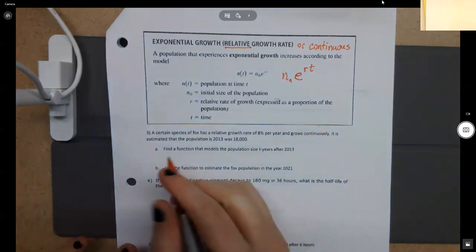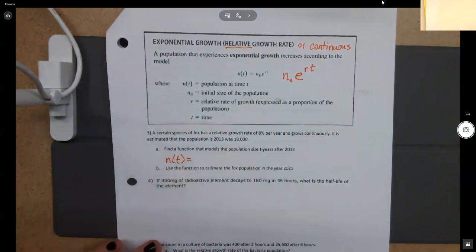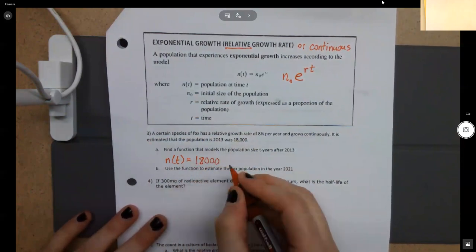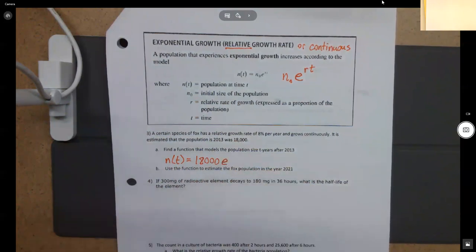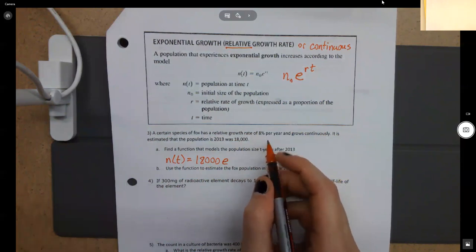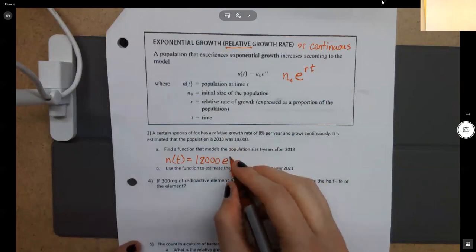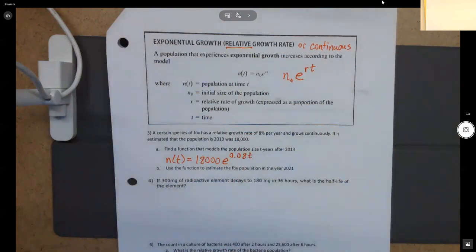So hopefully what you guys got for that formula is N of T, which is going to tell you the population after T amount of years equals, well, we have an initial population of 18,000 times E. Remember E is not a variable. It's actually a number. It's 2.71. Raised to the, now this is the biggest thing that people goof up on, is 8%. We have to write that as a decimal for it to work in our formula. So that would actually be 0.08 T. Looking good so far.